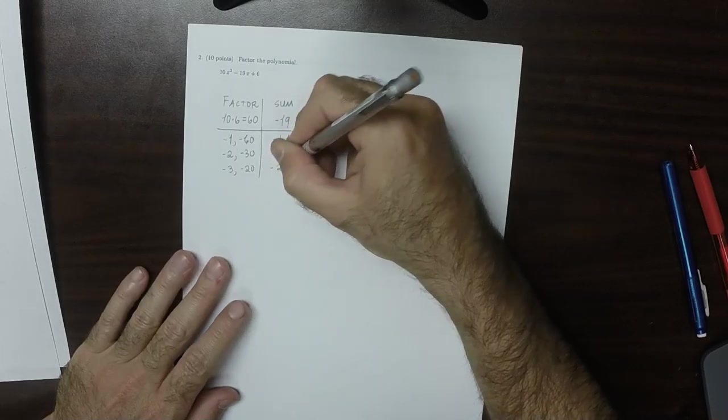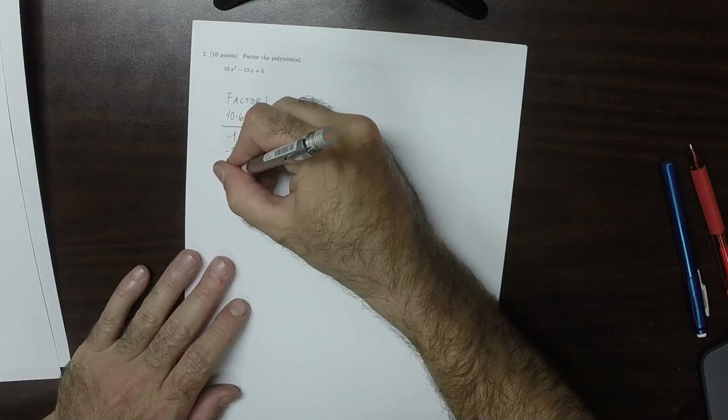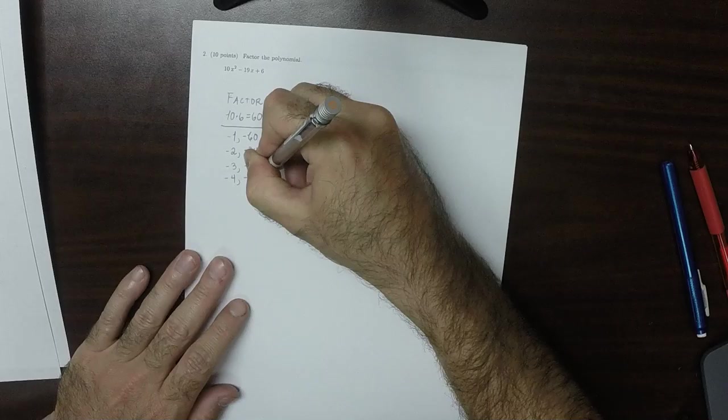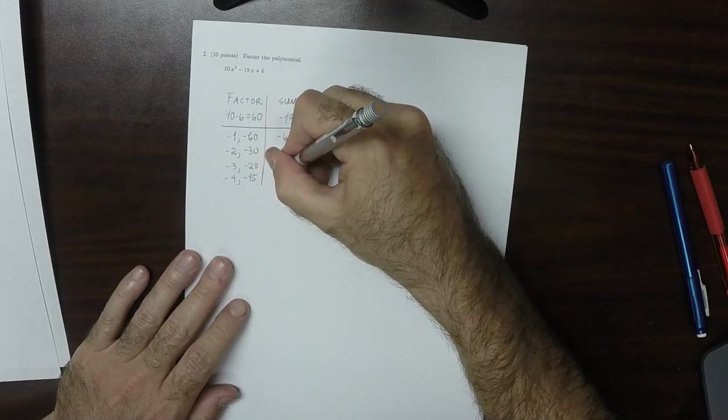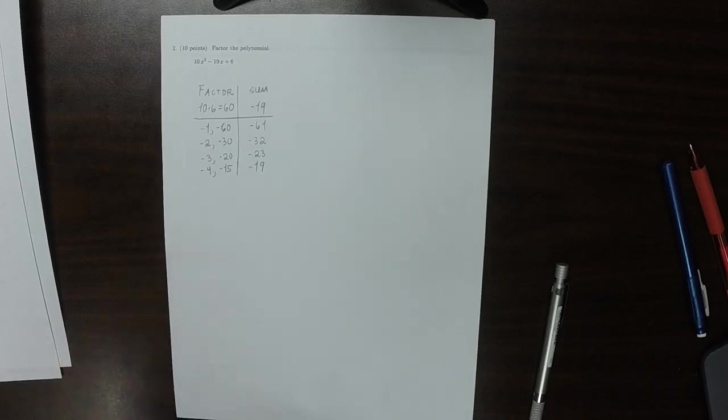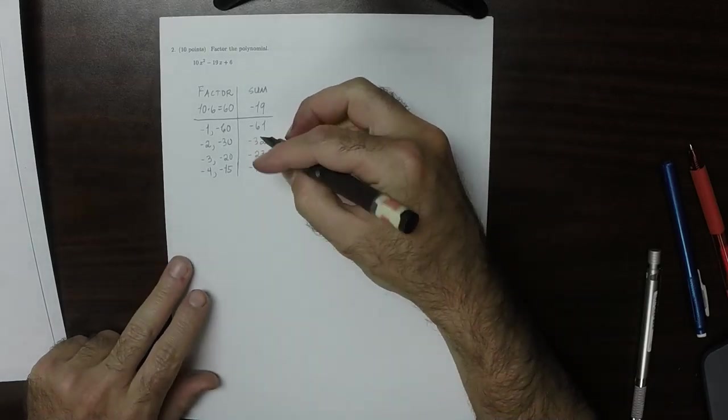That's not going to work either, but we're getting closer. How about negative 4 and negative 15? That's negative 19. Terrific. So we found the one we were looking for.